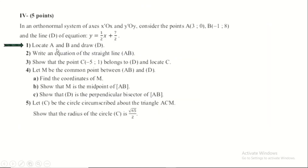In an orthonormal system (x'Ox, y'Oy) we have the points A and B, in addition to the straight line D of equation y equals half x plus 7 over 2. Locate the points A and B and draw the straight line D.